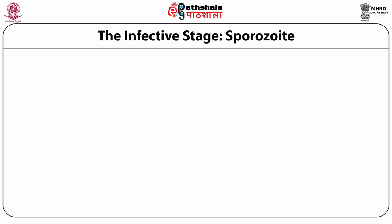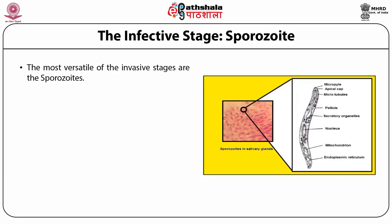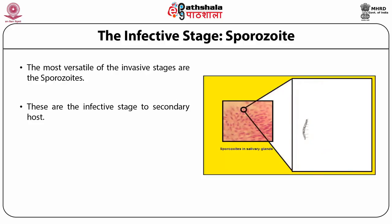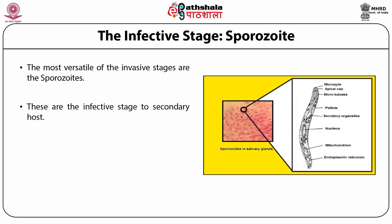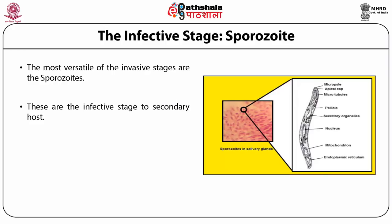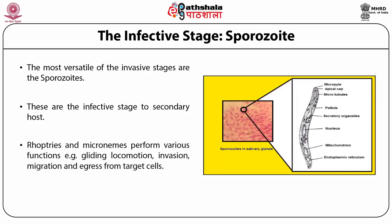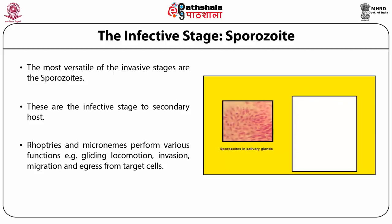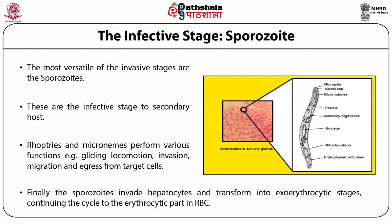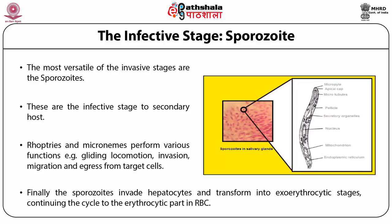The next stage is the infective stage called the sporozoite. The sporozoites are the most versatile of the invasive stages of the Plasmodium life cycle. During passage from the mosquito vector to the vertebrate host, sporozoites exhibit diverse behaviors including gliding locomotion, invasion, migration, and egress from target cells. These functions are performed by rhoptries and micronemes, which are the secretory organelles around the apical cap. Finally, the sporozoite invades hepatocytes and transforms into exoerythrocytic stages, continuing the life cycle into the erythrocytic part in RBCs.